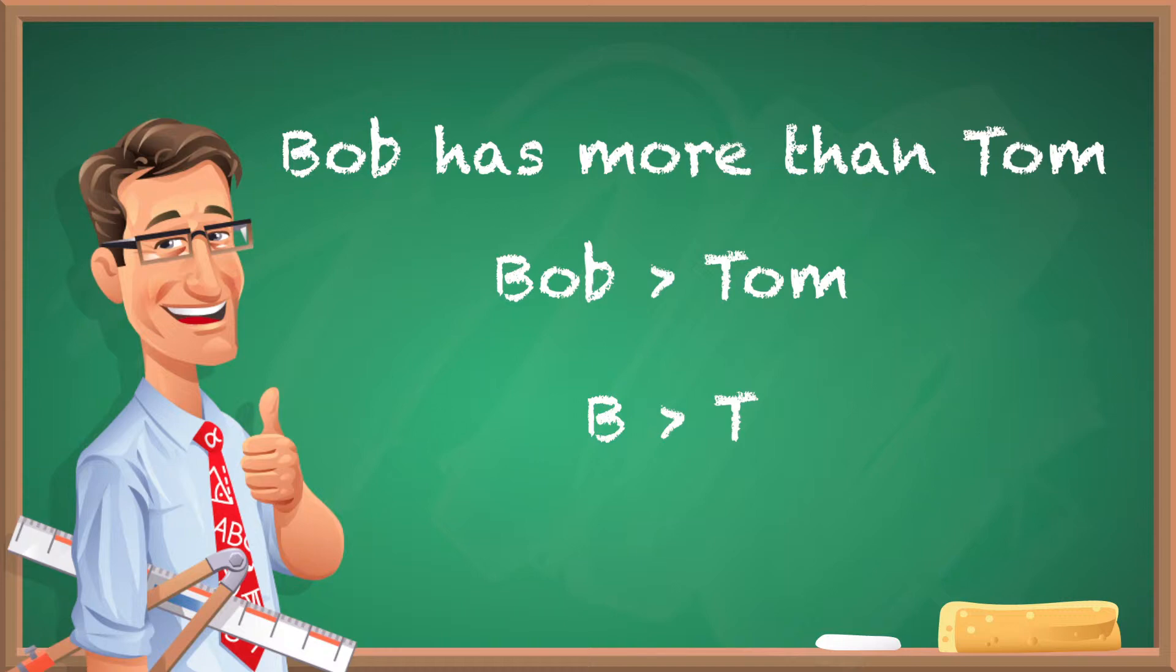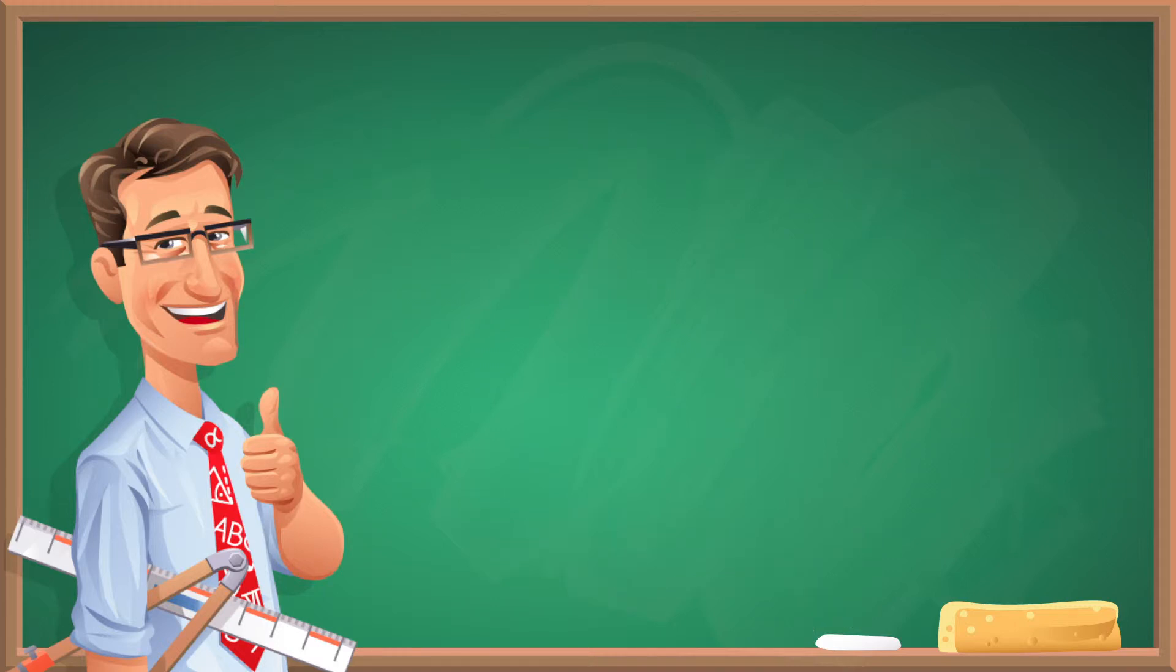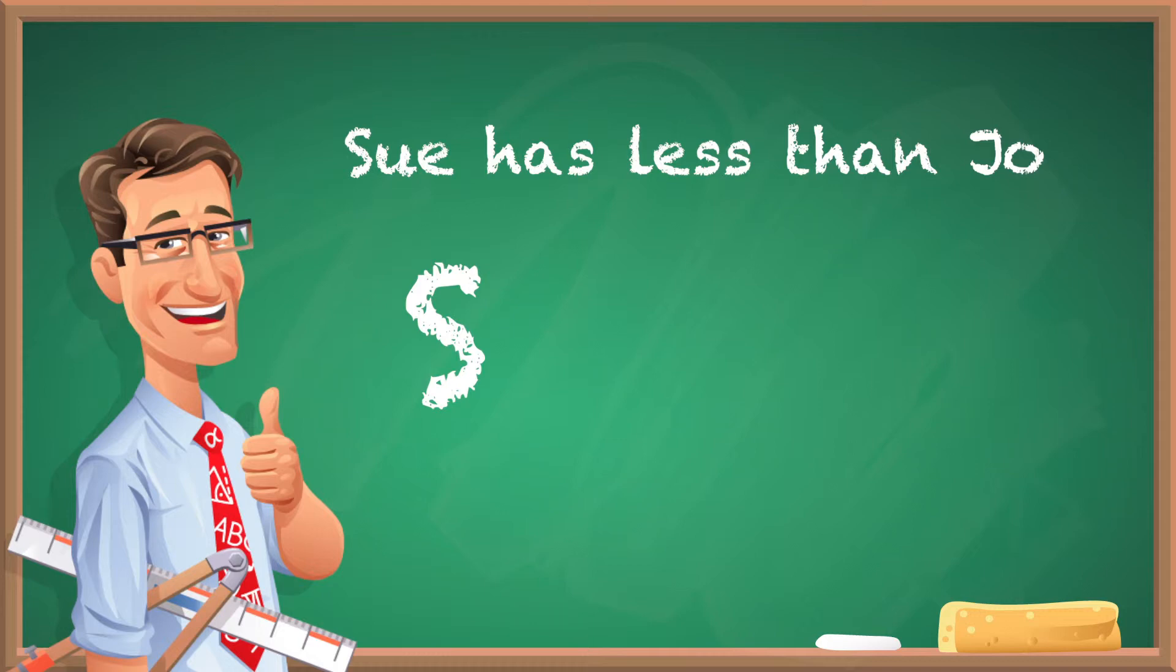If you see a phrase that says less than, you're gonna use the less than symbol. That's really about all you're gonna see with that. So if you see Sue has less than Joe, you can use S to represent Sue, J for Joe. You're gonna write S is less than J.